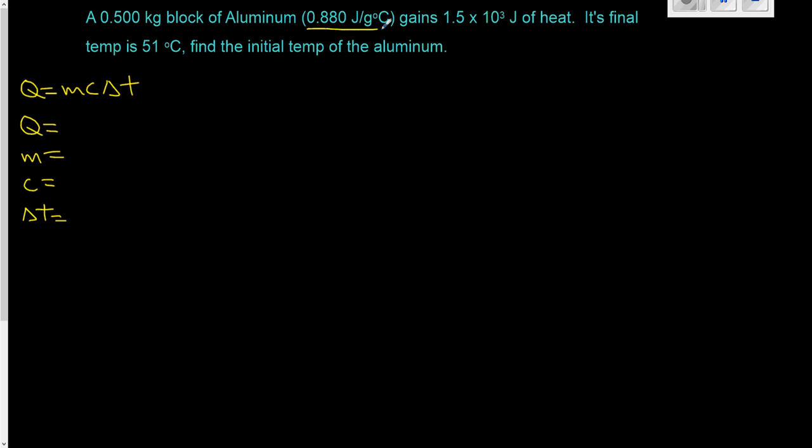Our constant is given at 0.880. Well, that's the standardized specific heat capacity for aluminum. But look at the unit that it's expressed in. We can express this in kilograms, or we can express it in grams. If our unit is given in kilograms, then I suggest that we convert this unit here so that it is like the constant.